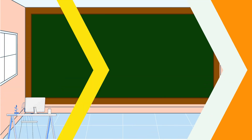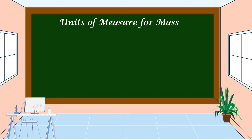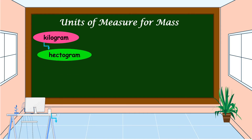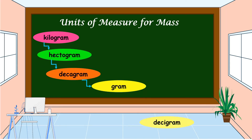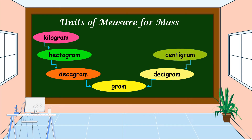The units of measure for mass are: kilogram, hectogram, decagram, gram, decigram, centigram, and milligram.